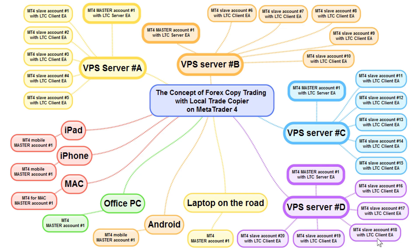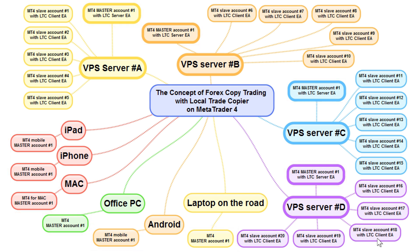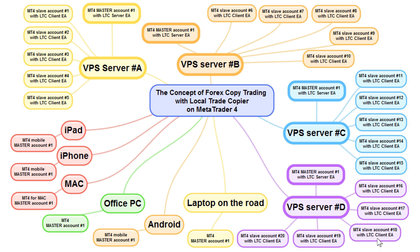Let me explain exactly what happens when you open a new position on MetaTrader mobile while those VPS servers are in place. When you open a new position or do any other action on currently open positions, the same updated trades list immediately becomes visible in all instances of master account number one. At that point, the Server EA running on all four VPS servers immediately sends these updates to each group of clients — all of this happens at the same time in just a matter of milliseconds, normally in less than one second.